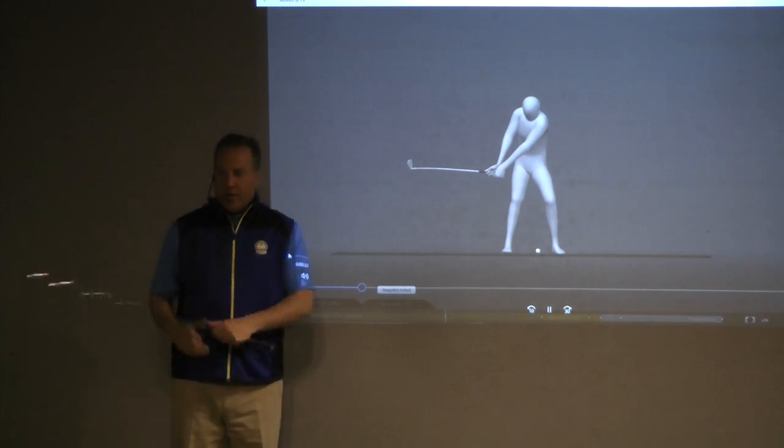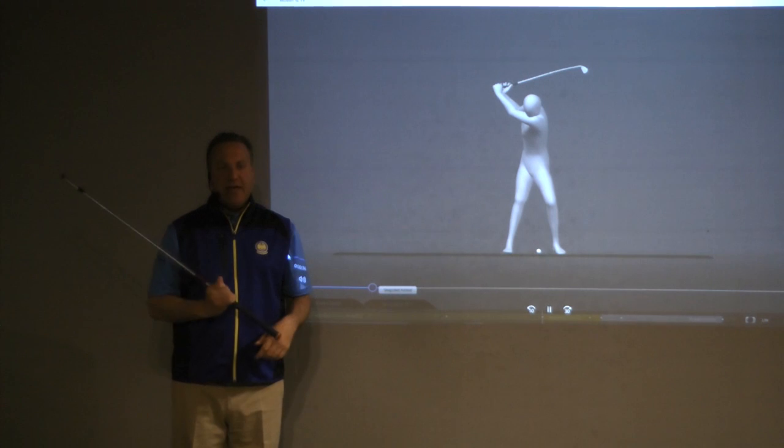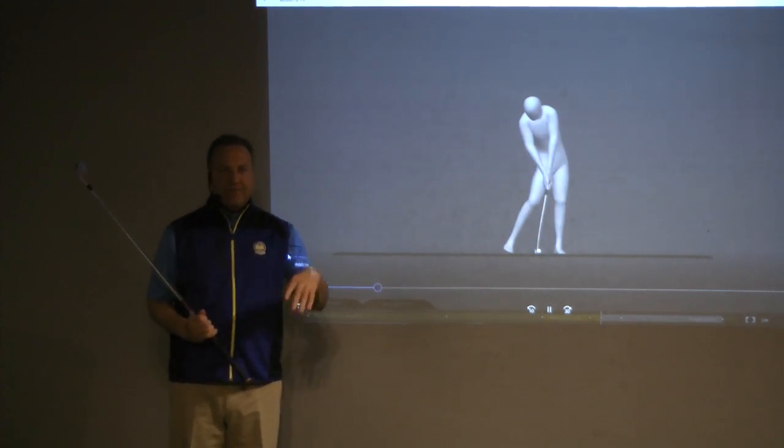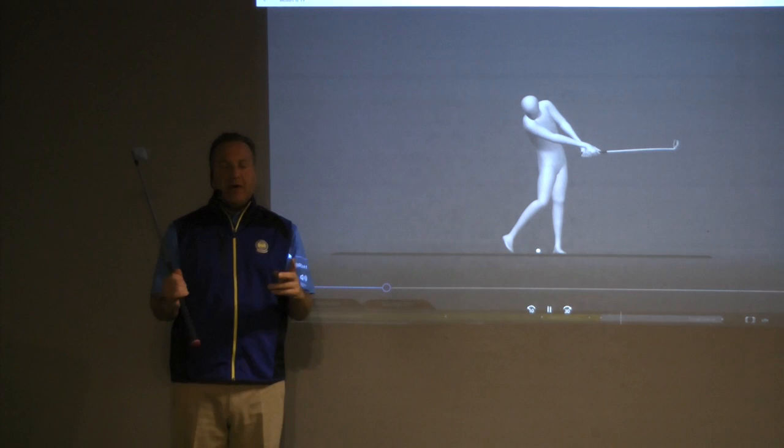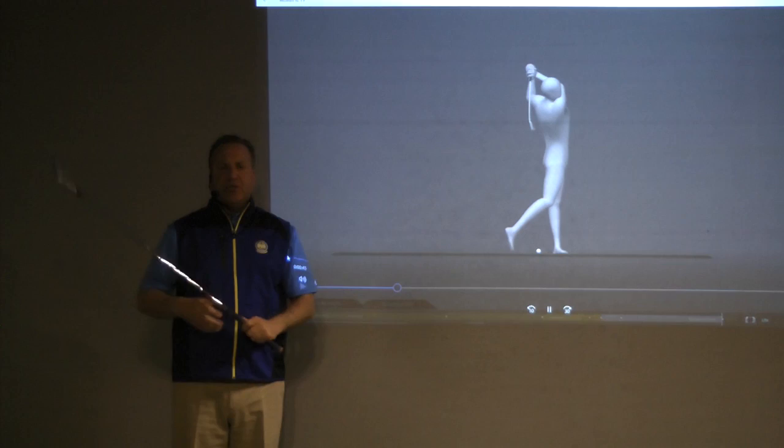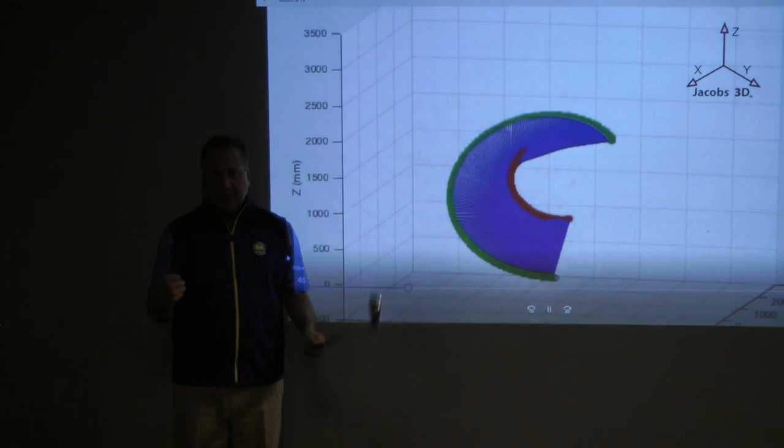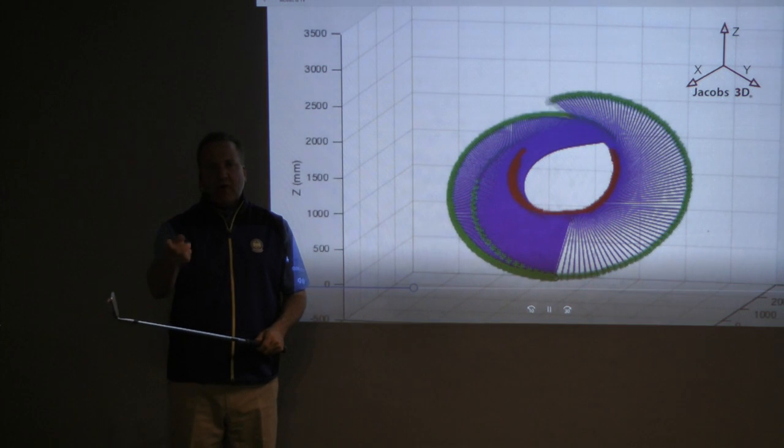You might have a tour player who reaches a peak speed of 18 miles an hour at the hands, and you might have a five handicap who reaches 21 miles an hour. So what gives? How can that tour player have much greater club head speed and play better than somebody who has a faster hand speed? It's all about how it gets transferred out.